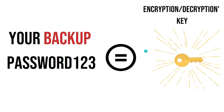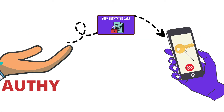Let me break it down even further. I could attempt to steal your codes by installing Authy on my phone using your cell number. Even if I were successful — and I say even if because there are other security checks that Authy has in place — Authy would essentially send me your encrypted data. I'd have that encrypted data on my phone, but the data would be encrypted and I wouldn't be able to see your codes.